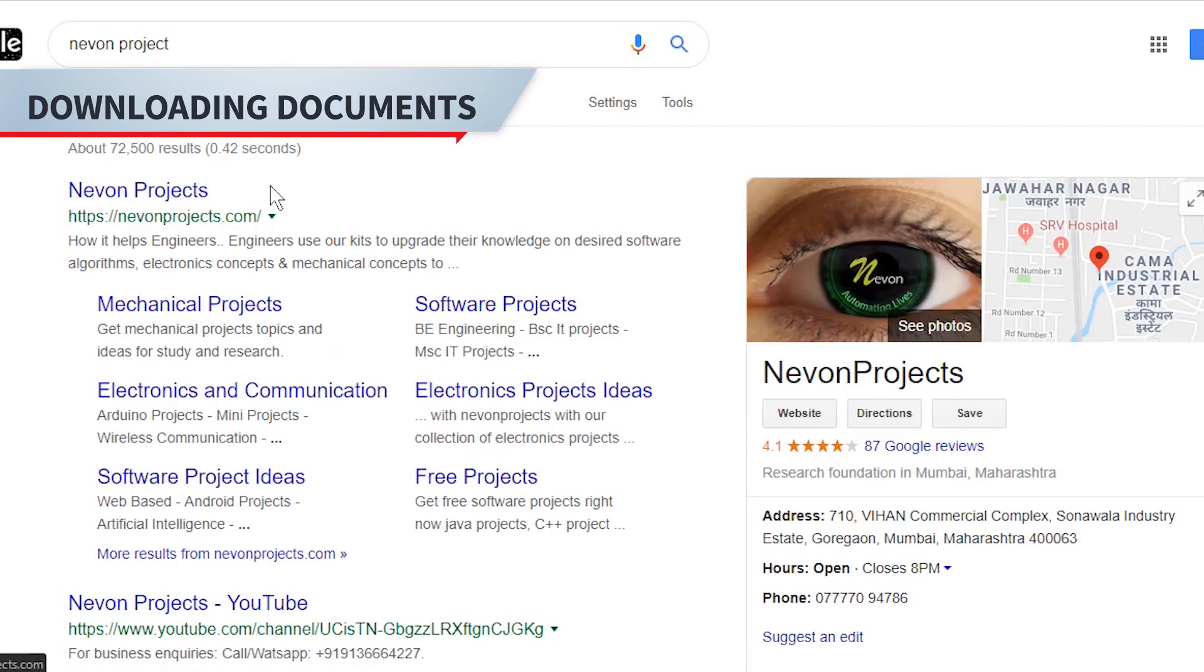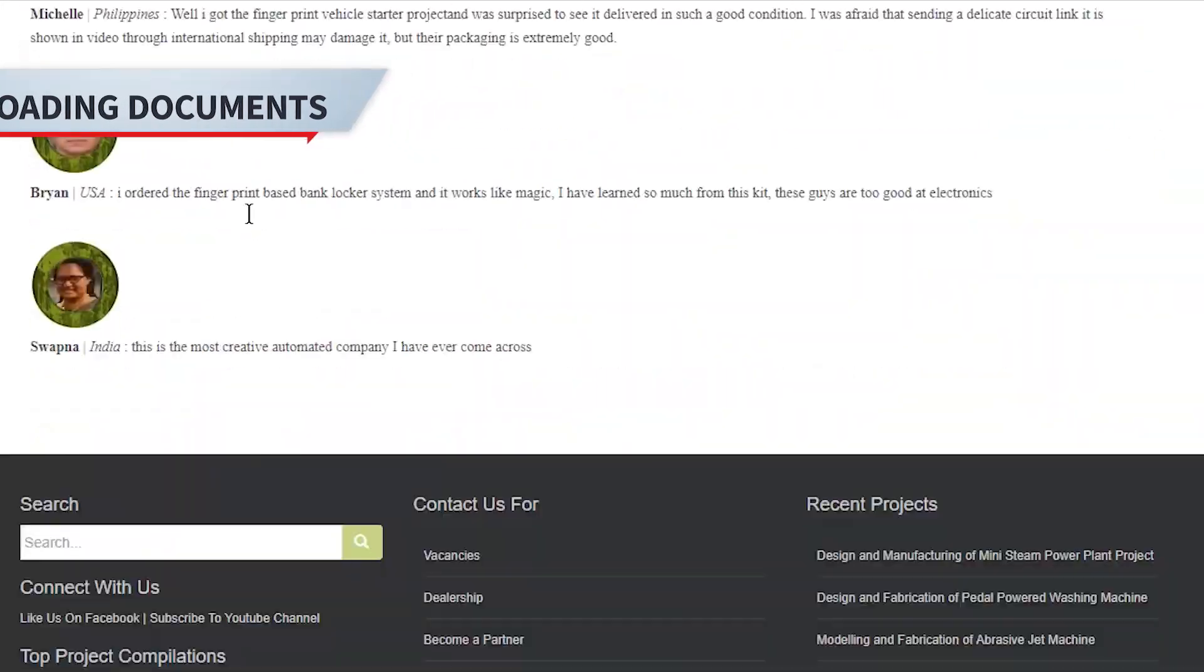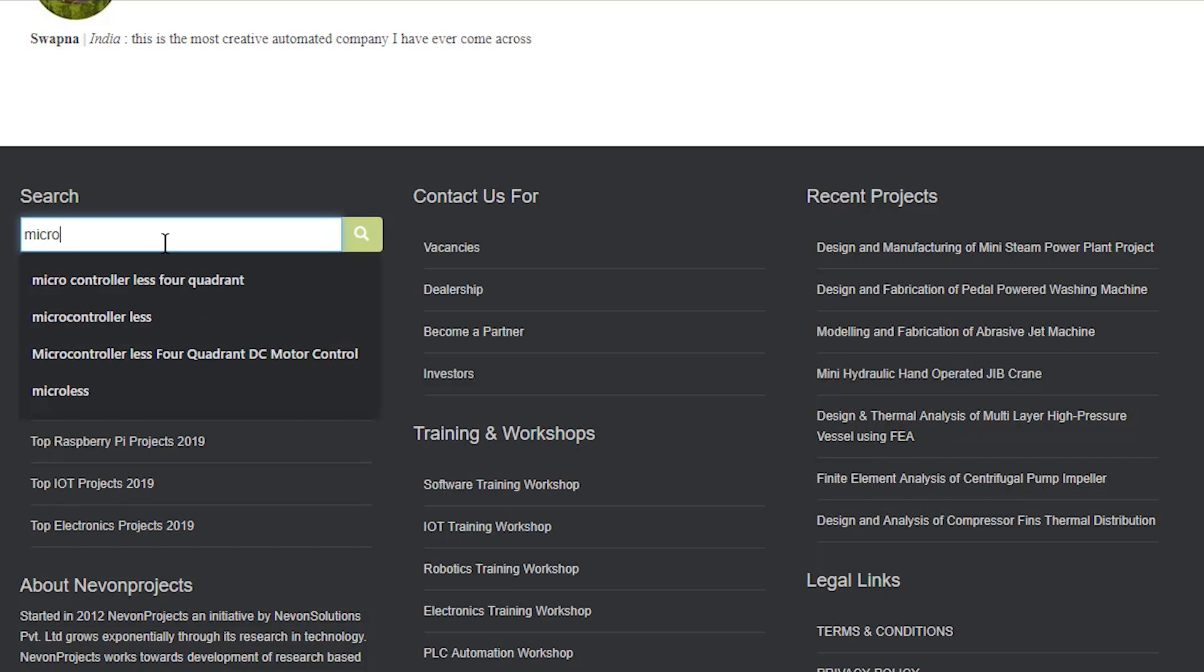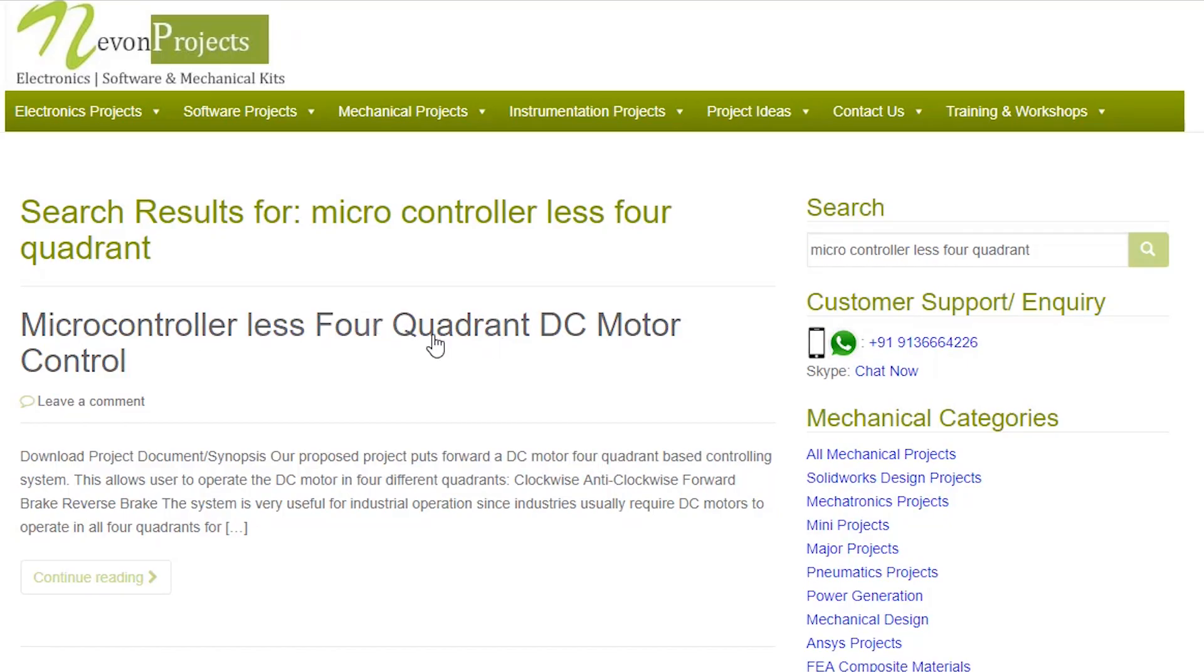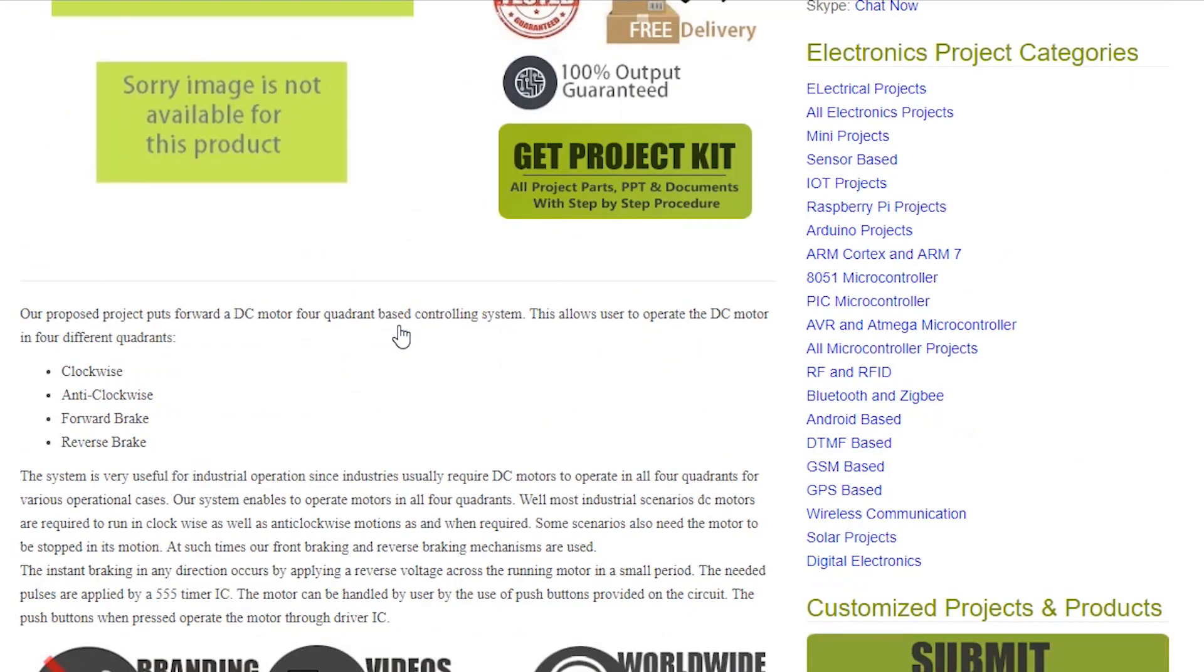Hello guys. To download the project document, just visit nivonprojects.com. Search the project name. Once you see the project page, click on it. Now click on download document.